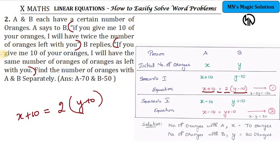For the second scenario, if A gives 10 oranges to B, A will have X minus 10 and B will have Y plus 10. The statement says they will have the same number of oranges. So X minus 10 equals Y plus 10. Rearranging gives X minus Y equals 20. Solving these two equations gives the answer as 70 and 50. A has 70 oranges and B has 50 oranges.